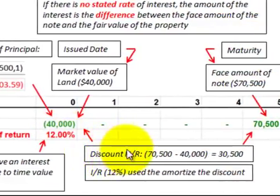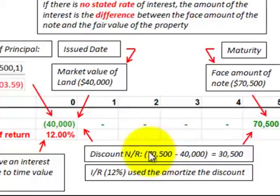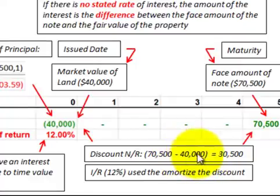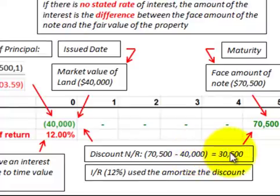We determine the imputed interest rate to be twelve percent. We have a discount on this notes receivable — the note's maturity value is seventy thousand five hundred dollars and the land's fair market value at issuance is forty thousand dollars, giving us a discount of thirty thousand five hundred dollars.